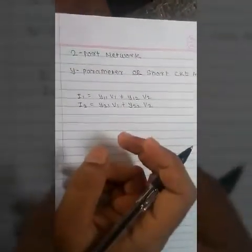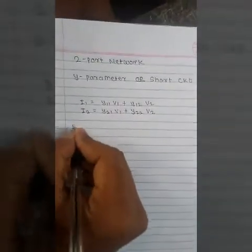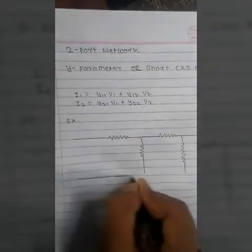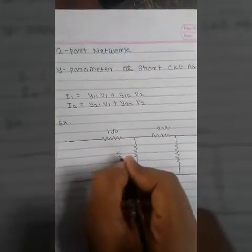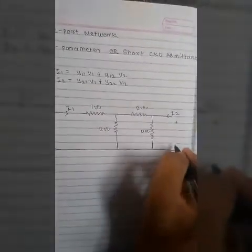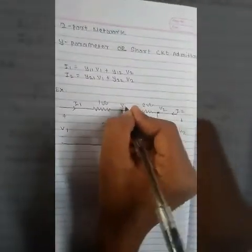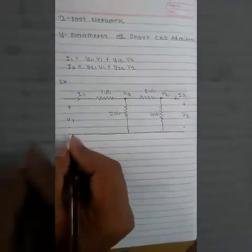Let's get started with an example. The circuit has resistors: 1 ohm, 1 ohm, 2 ohm, 2 ohm, and 4 ohm. The currents i1 and i2 are labeled, along with voltages v1 and v2. We identify three nodes: v1 node, v2 node, and v3 node.